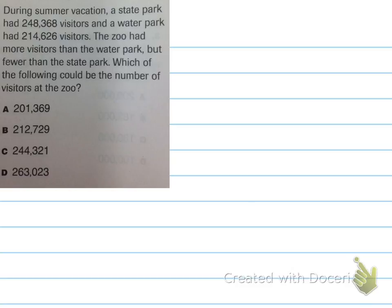So here's our first word problem. During summer vacation, a state park had 248,368 visitors, and a water park had 214,626 visitors. The zoo had more visitors than the water park, but fewer than the state park. Which of the following could be the number of visitors at the zoo?